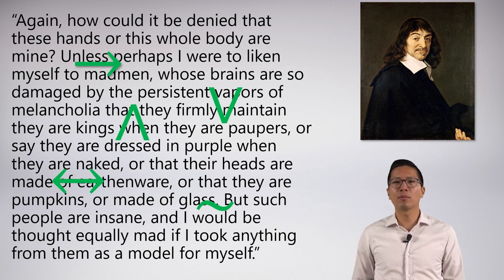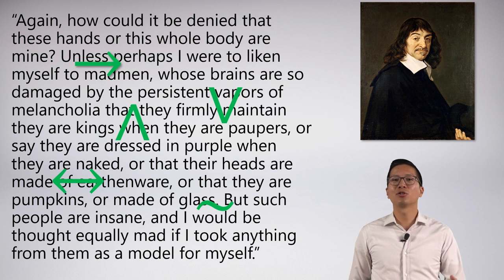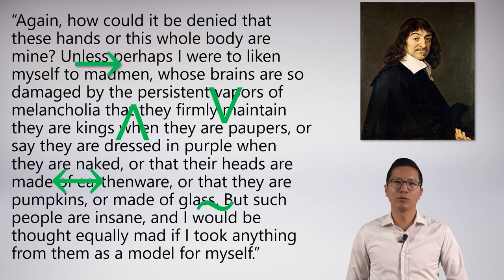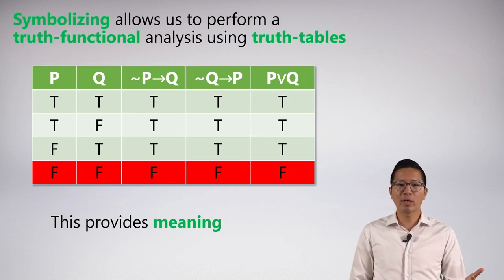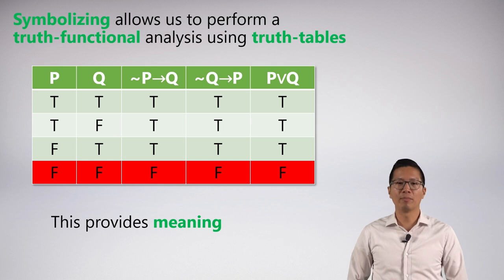Logical connectives are important because we can make sense of arguments in terms of truth. That's a great skill so we can know if arguments are valid, which is the gold standard of arguments. Symbolization allows us to do this because we can take our statements or arguments and use truth tables to provide meaning.